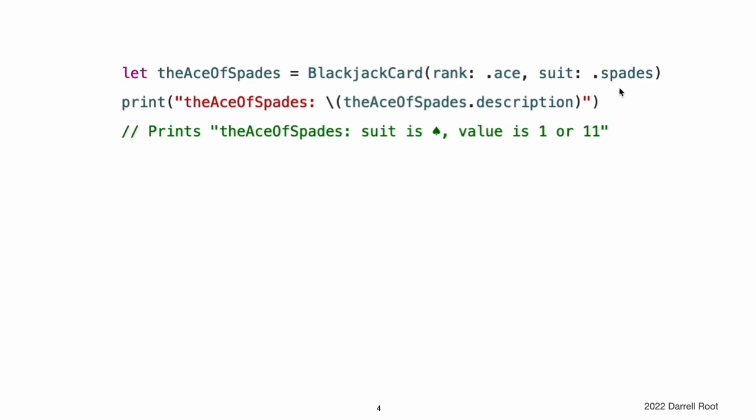In this example, the Description property correctly reports that the Ace of Spades has a value of 1 or 11.